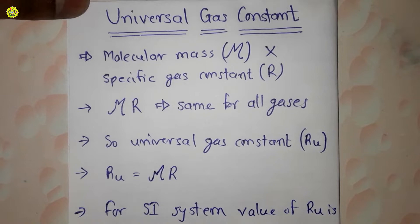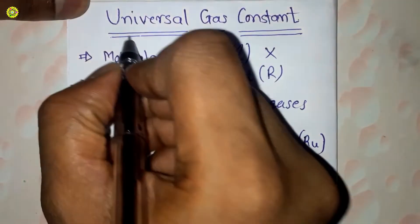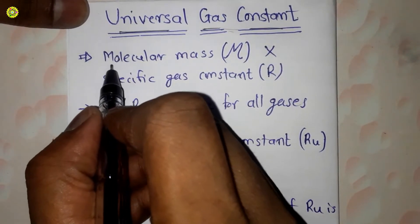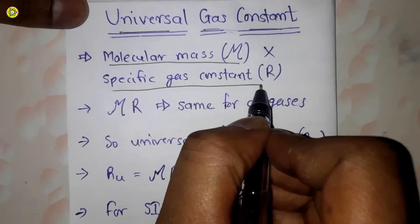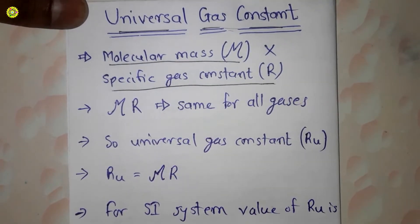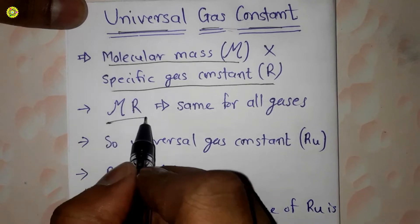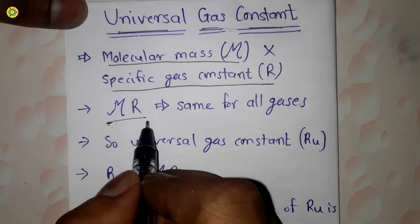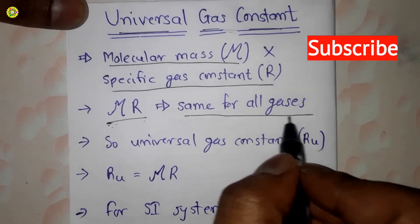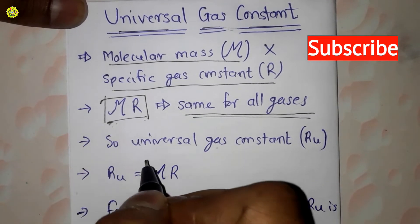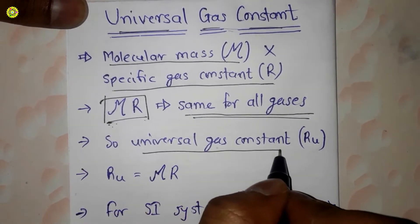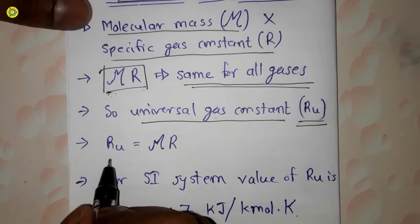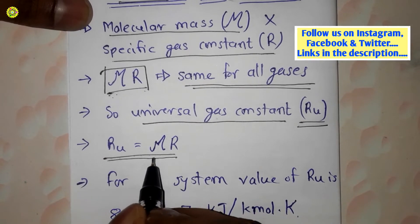Welcome. In this video we will study about the universal gas constant. When we multiply molecular mass by the specific gas constant R, we observe that this product is the same for all gases. This term is called the universal gas constant and it is denoted by Rᵤ.